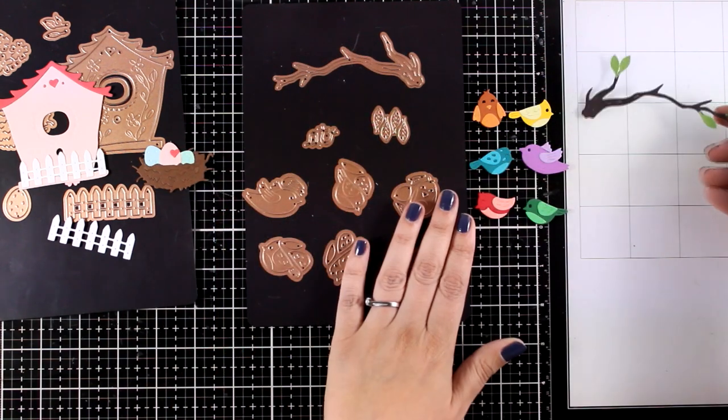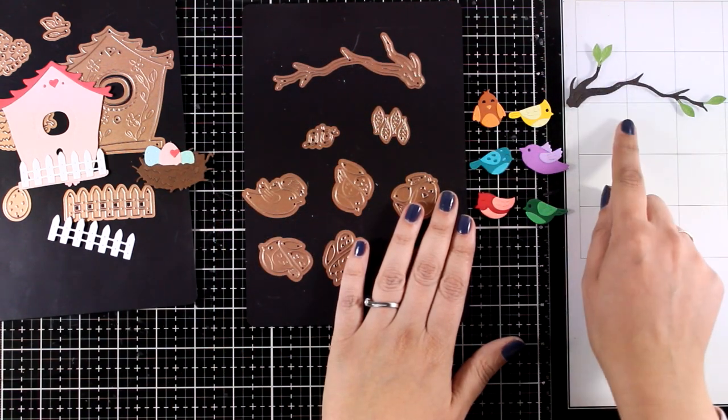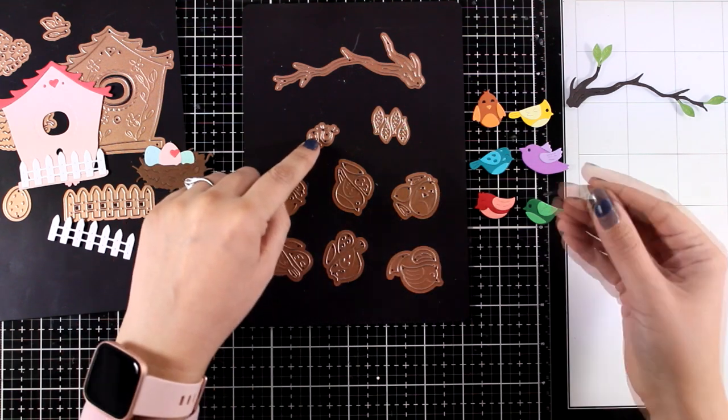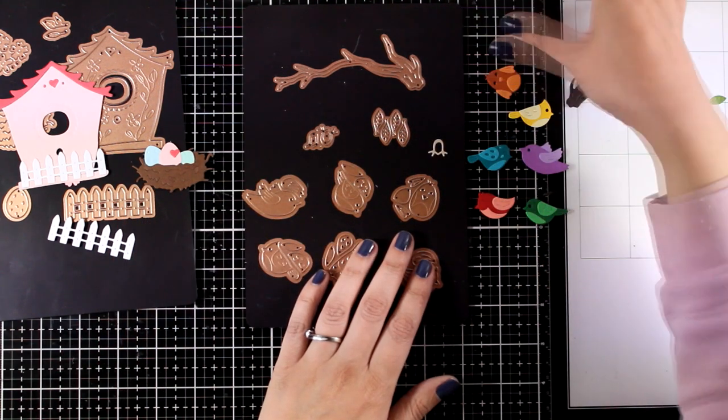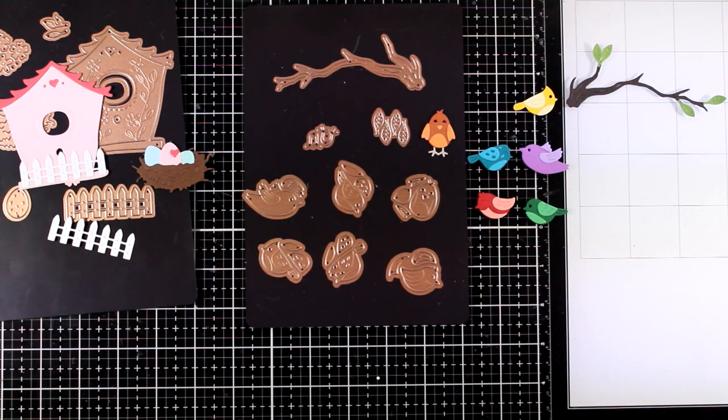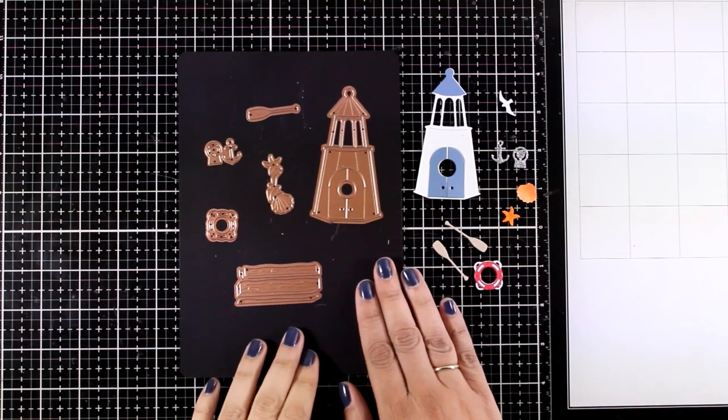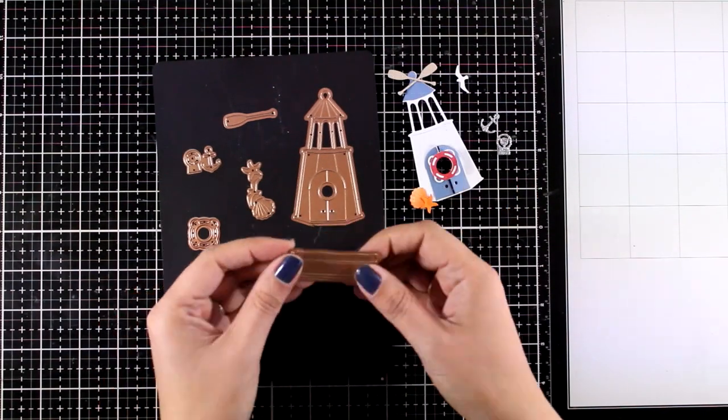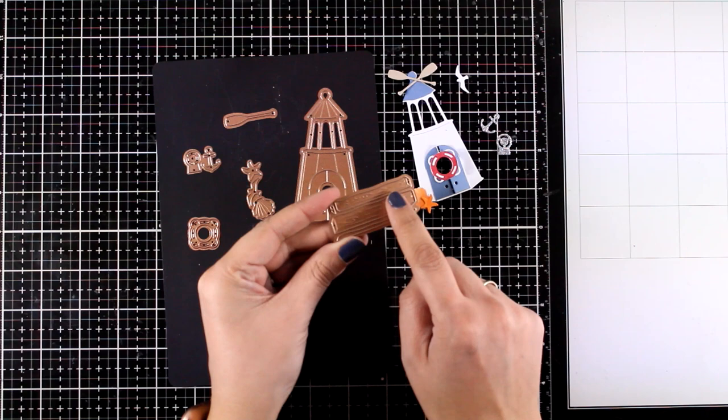You'll also get a very realistic looking branch that you can use for placing on top your little birdies or even hanging your bird house. For today's card I'm going to use the spring bird house, I will use a couple of birdies, and from the summer set I'm going to grab the wooden plugs so that I can create a tee to place my bird house on top.